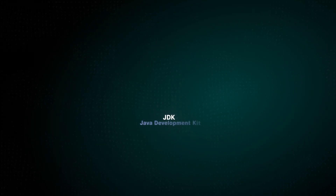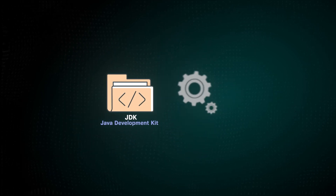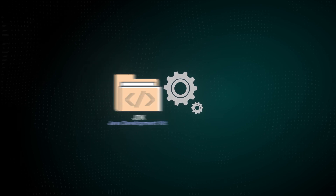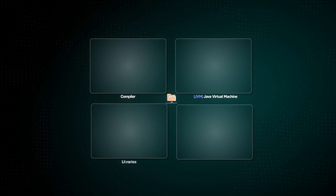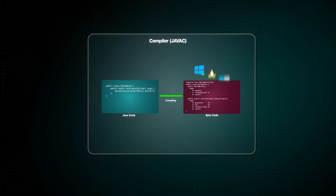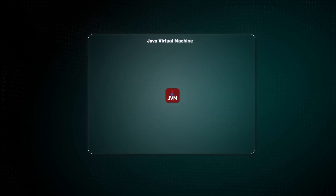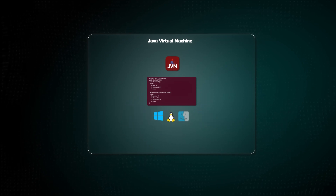The JDK, or Java Development Kit, is a software package that contains everything needed to write, compile, and run Java applications. It's the full toolkit for Java development. Within the JDK, there are four key components: the compiler, the JVM or Java Virtual Machine, libraries, and development tools. The compiler, or Javac, converts the Java code you write into bytecode, which is platform-independent. The JVM then executes this bytecode on any system with a compatible JVM, enabling Java's cross-platform compatibility.